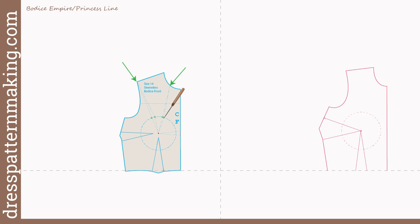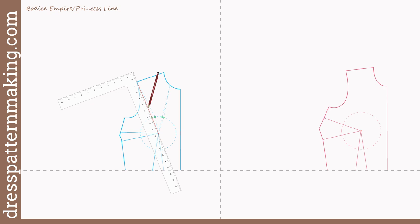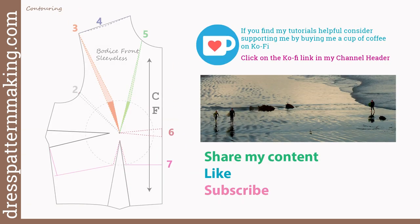Trace the outline of the block and mark the bust point. Mark the dart leg notch points at the edges but don't draw the dart legs as on the block — we'll redraw them to the bust point on the paper. Draw the bust mound using a compass set to the radius of your bust mound, or use a pencil and string if you don't have a compass. For the standard contouring on the left, transfer the contour markings at the neckline and shoulder using an awl pushed through the block to the paper.